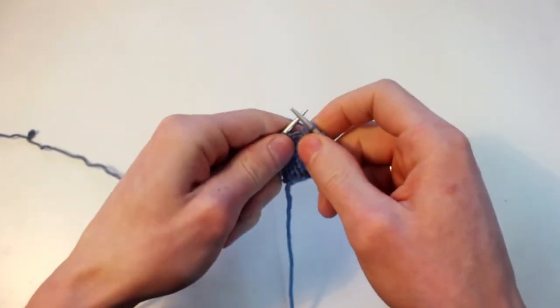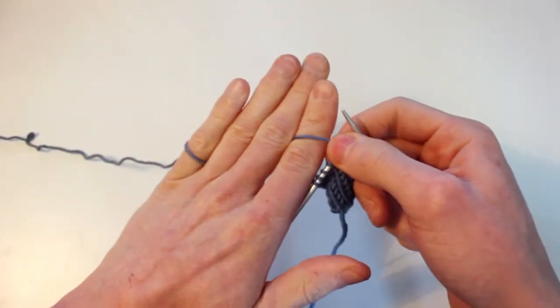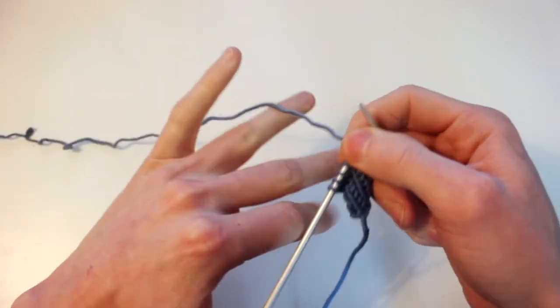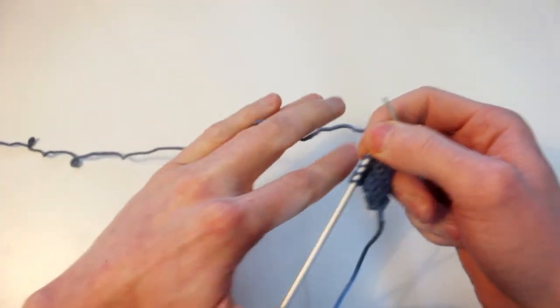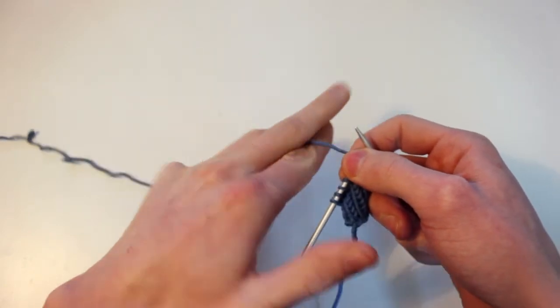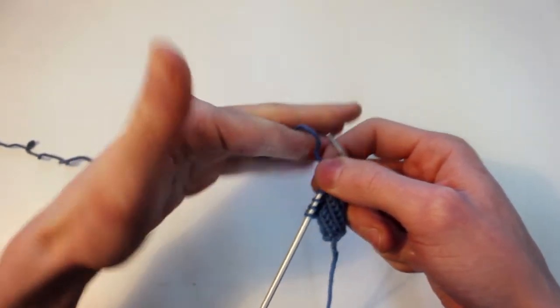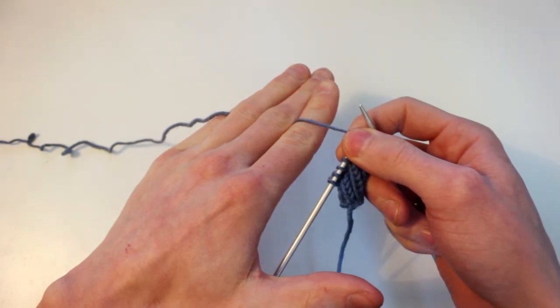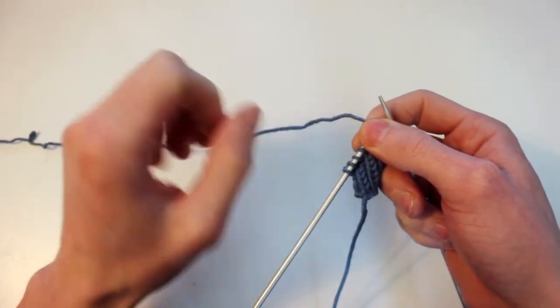So I prefer to have it wrapped around my pinky finger. I think that gives the best tension. You may prefer to weave it in between all your fingers like that, or maybe just in between two fingers, or over your pinky and then over your index. This is all personal preference.